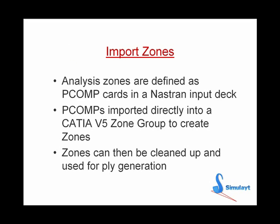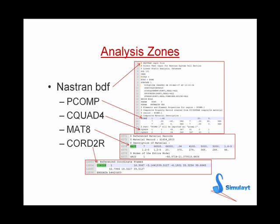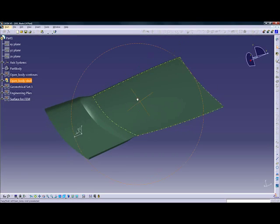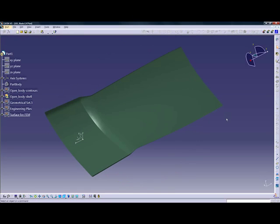Those familiar with Nastran will recognise the concept of PCOMP cards. These are imported directly from a Nastran input deck or BDF file to create zones within CATIA V5. The relevant parts of the input deck include the PCOMP card to define the zone composition, the CQ4 to indicate the extent of the zones in terms of elements, the MAT8 material definitions, and any relevant coordinate systems to be used as a rosette. In this first example, we'll show the import of zones from an analysis model onto a CATIA V5 model — in this case, a typical turbine blade.